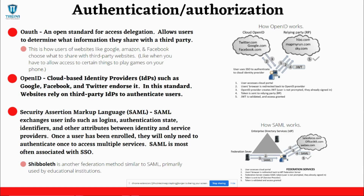In OpenID, the user will make a request to the relying party, which is the site they're trying to access. The relying party will then send that request to the identity provider, and the identity provider will then authenticate the user against their authentication servers.